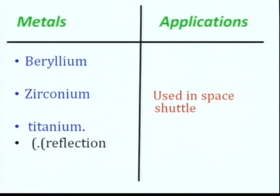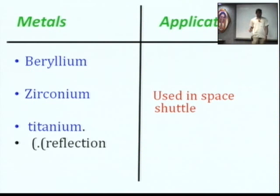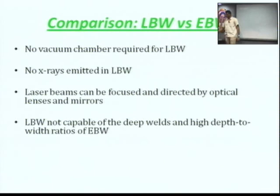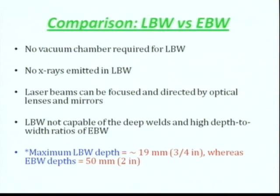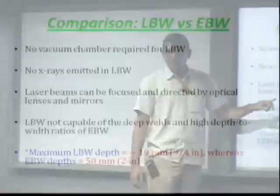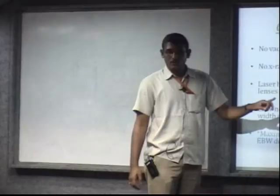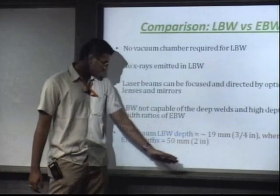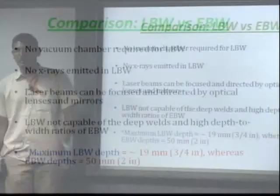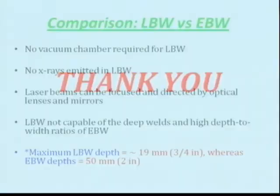So far we have discussed laser beam welding and electron beam welding. Now we can see the comparison between the two. The first point is the same: LBW does not require any vacuum chamber. The main comparison is in the last two points: laser beam welding is not able to produce deep welds with a high depth-to-width ratio — the maximum depth is approximately 19 millimeters — whereas for EBW it is equal to 50 millimeters, or sometimes slightly less but not less than 48 millimeters. Thank you for watching. In the next class we will discuss the processes involved in GMAW and GTAW. Thanks for watching.